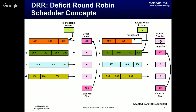At the next queue, the counter is initialized to 600. The first packet (200 bytes) is served, decrementing the counter to 400. The second packet (300 bytes) can also be served, decrementing the counter to 100. Since the next packet requires 400 bytes and only 100 bytes of credit remain, it cannot be served. The round-robin pointer moves to the next queue, which is initialized to 600 and the process repeats.